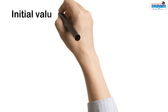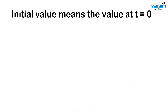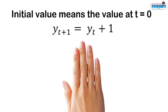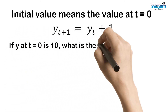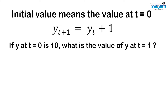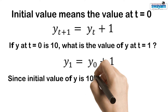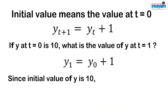The initial value means the value of the unknown variable at t equal to 0. Consider this first order difference equation. If the initial value of y is 10, what will be the value of y in the next period? Clearly we may write at t equal to 0: y1 is equal to y0 plus 1. Since the initial value of y is 10, y1 is equal to 11.